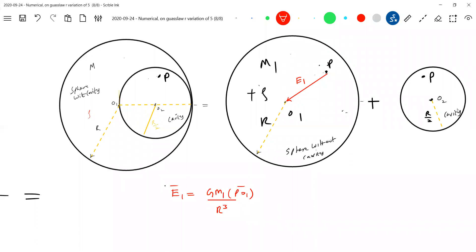Similarly, I want E2. E2, this is of negative density. If it were positive density, the E2 would have been towards O2. Since it's of negative density, it should be away. So, therefore, this vector will be directed like this. There's a main trick of the problem.